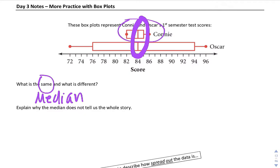It says explain why the median does not tell the whole story. Well they have the same median, but Connie has a lot more consistent scores and Oscar can score really low but he also can score really high on his tests.